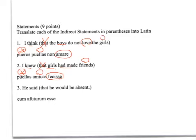'He said that he would be absent.' Again, don't translate 'that.' The subject, he, would be in the accusative, because it's the subject of an indirect statement. 'Would be absent' — you'll use the future active infinitive. Notice the future active infinitive agrees with the subject: accusative, masculine, singular.